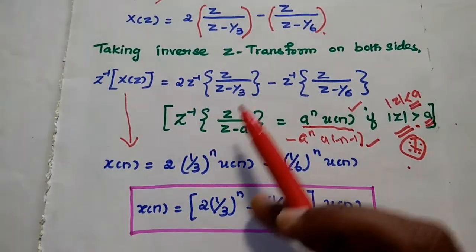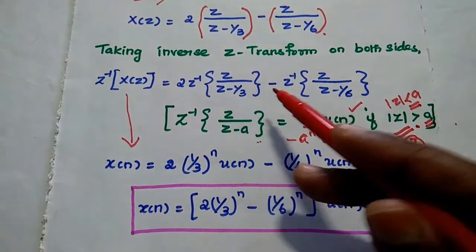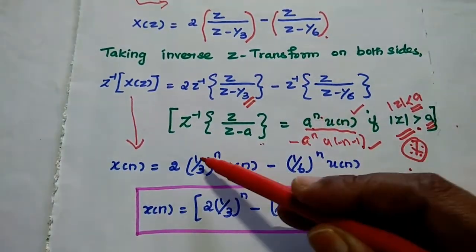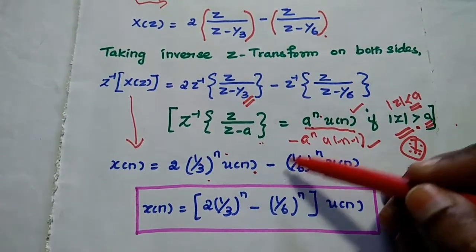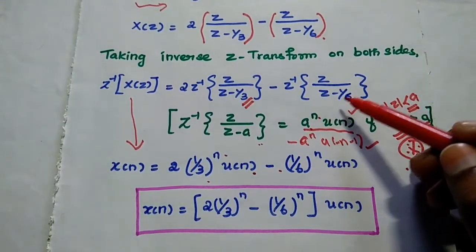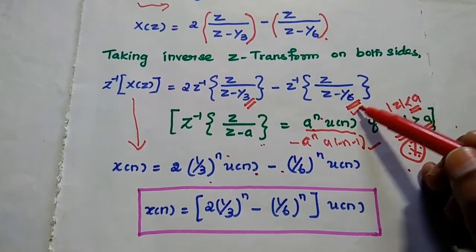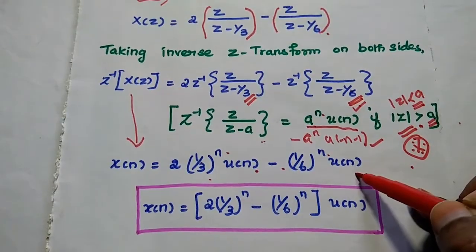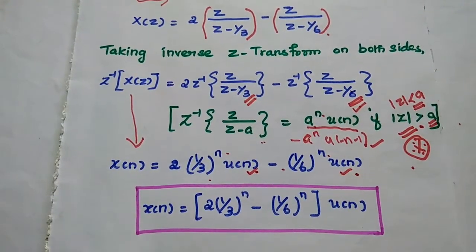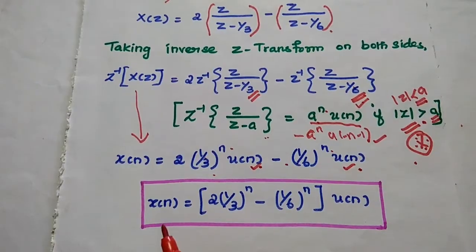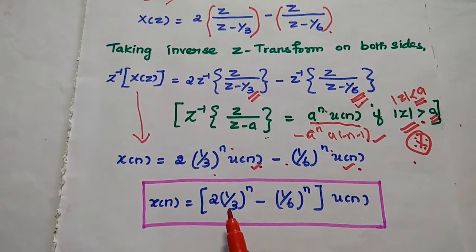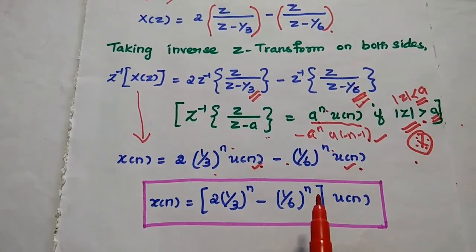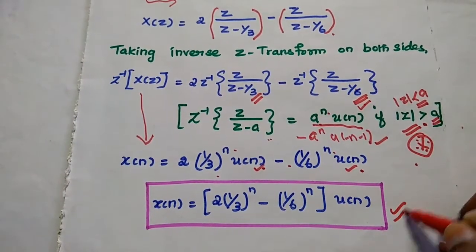Applying the formula: 2·[Z/(Z - 1/3)] gives 2·(1/3)ⁿ·u(n), and Z/(Z - 1/6) gives (1/6)ⁿ·u(n). Therefore, the final answer is x(n) = [2·(1/3)ⁿ - (1/6)ⁿ]·u(n). This is the inverse Z-transform of the given X(Z).